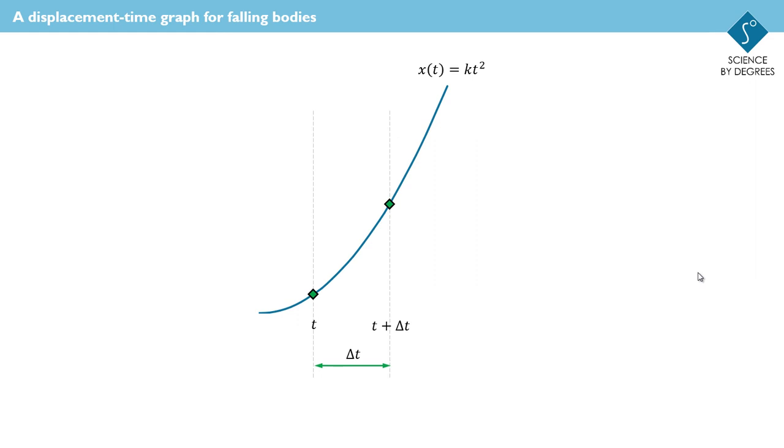Then what we have is we have a displacement at time t, which is given by the function. And a displacement at time delta t later, which is also given by the function but this time instead of t squared it's the slightly later time squared. How does that help?